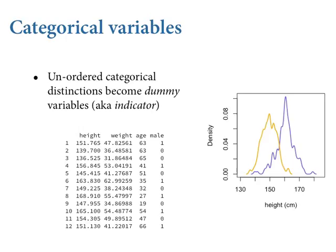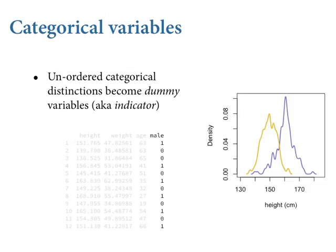Dummy variables effectively allow each category in the data to have its own intercept — all they do is push the regression line up and down. The model looks just like a linear regression, with m_i being whether or not the individual on row i is male, and beta_m as the coefficient. It's exactly the same as any other predictor — the model sees no difference. It's just coded in a way that makes interpretation easier for you.